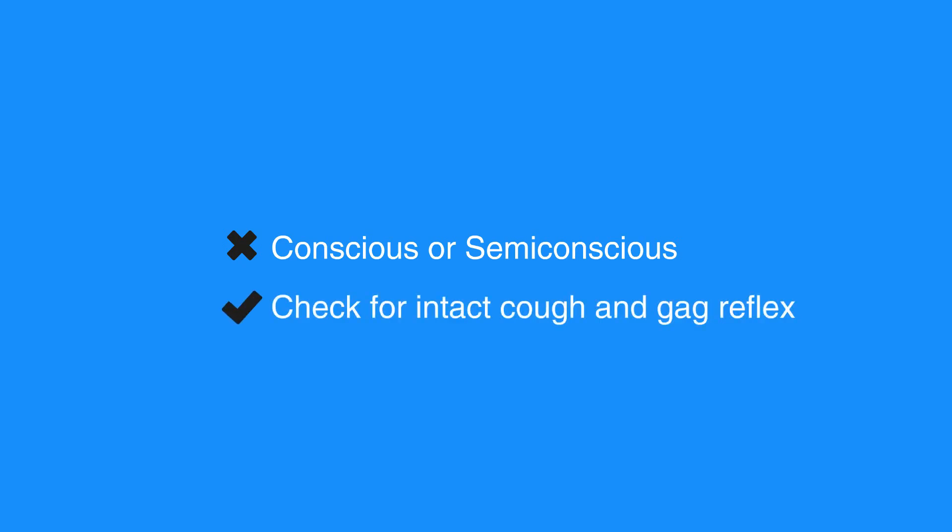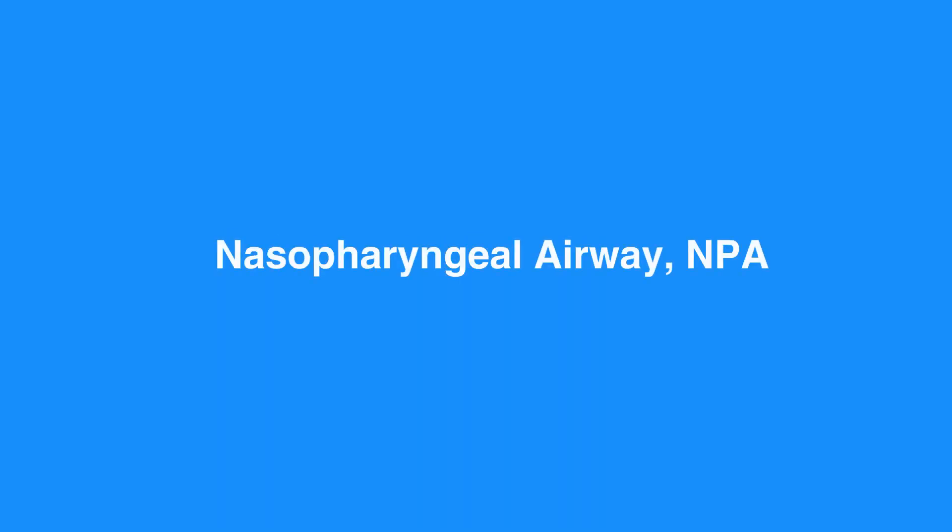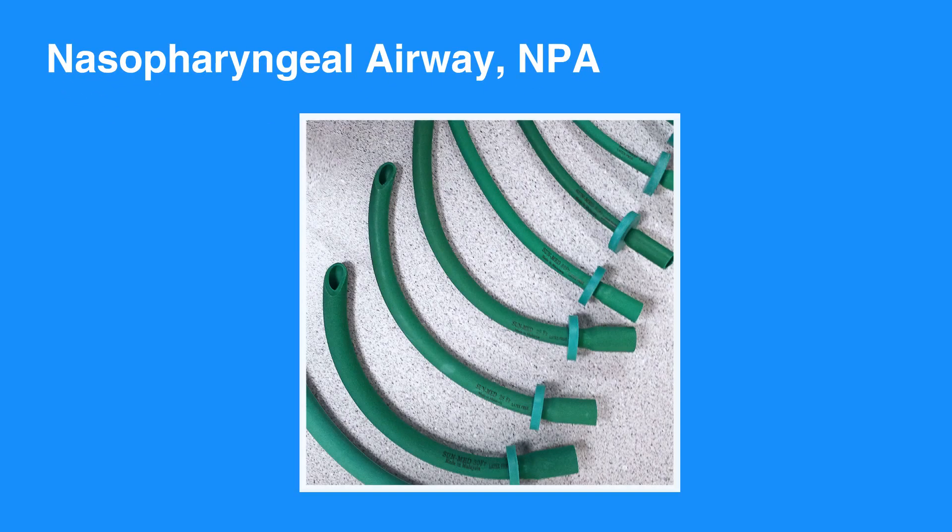In unconscious individuals, you should not use an OPA in conscious or semi-conscious individuals because it can stimulate gagging and vomiting, and possibly aspiration. The key assessment is to check whether the individual has an intact cough and gag reflex. If so, then do not use an OPA.